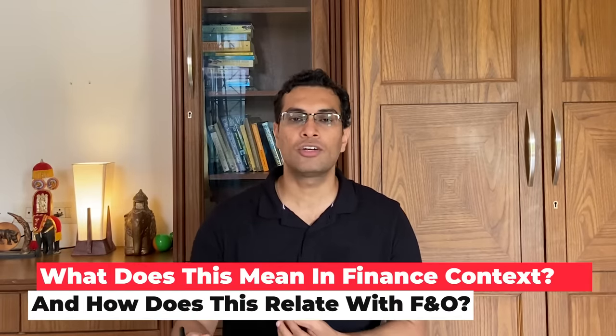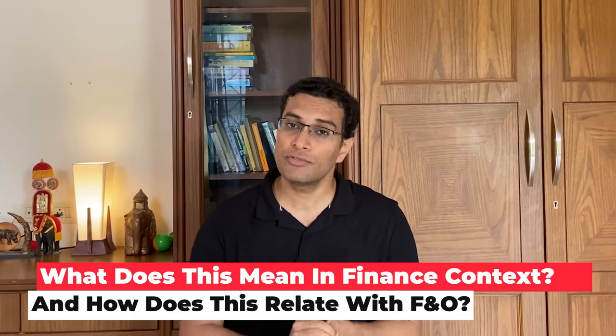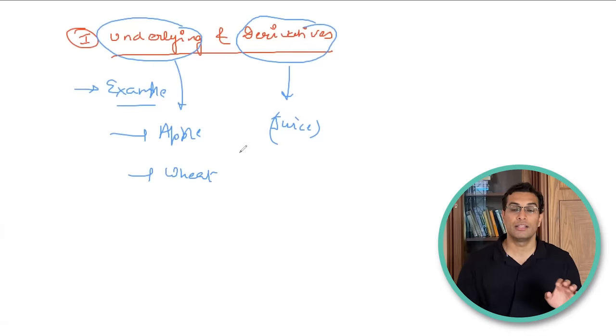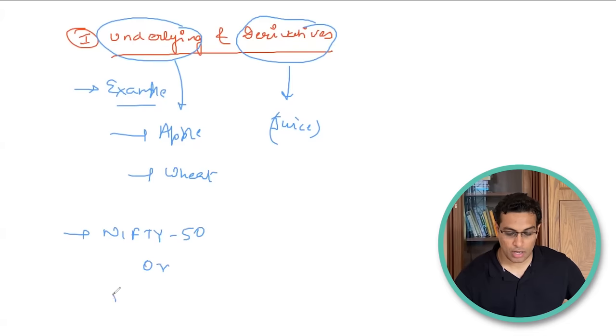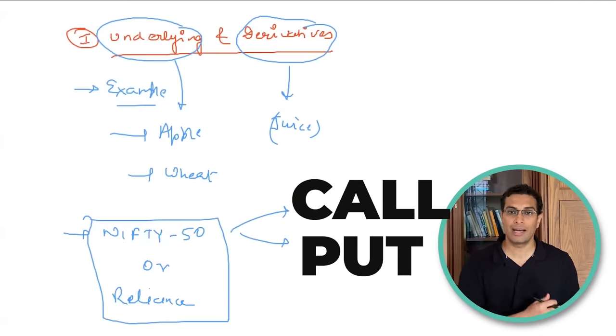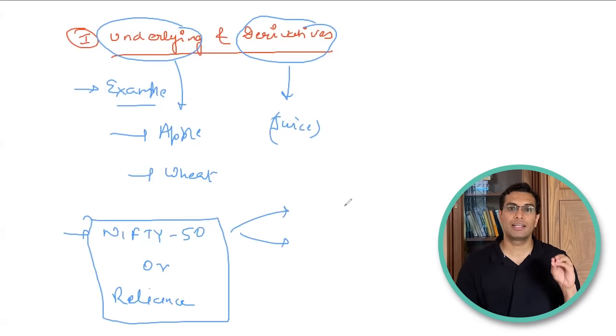I hope the first point is clear — what is an underlying and what is a derivative. In the finance or stock market context, futures and options are a type of derivative. On the stock market, you can trade contracts of an underlying like Nifty 50 or Reliance. You can buy derivatives — call options or put options — for underlyings such as Nifty 50, Bank Nifty, Reliance, HDFC, or any listed stocks in the F&O domain.